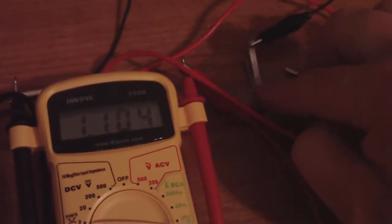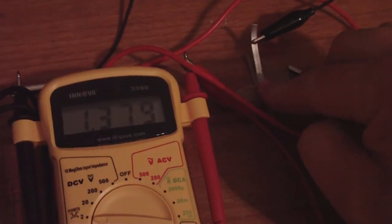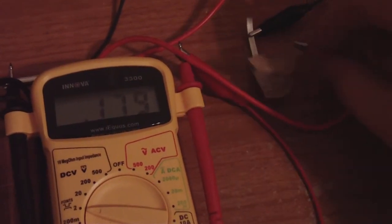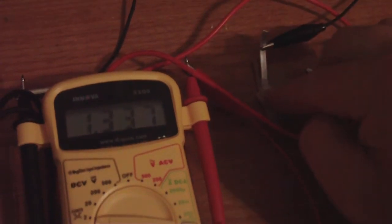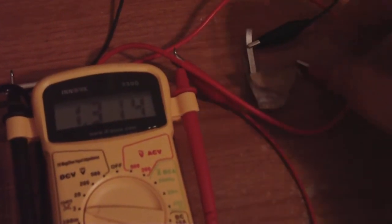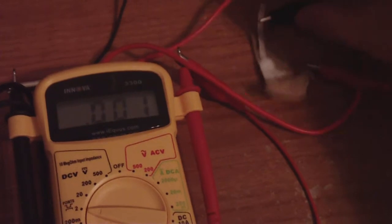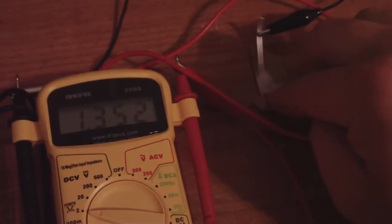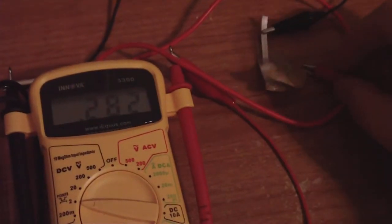You can see we get 1.37 volts, and then I can do this anywhere on the crystal cell itself. Do it down at the bottom and you see we get voltage. It's no big deal.